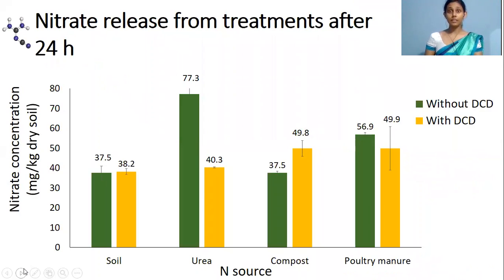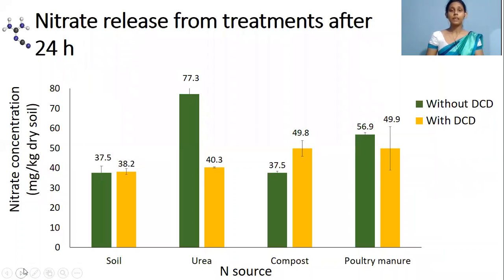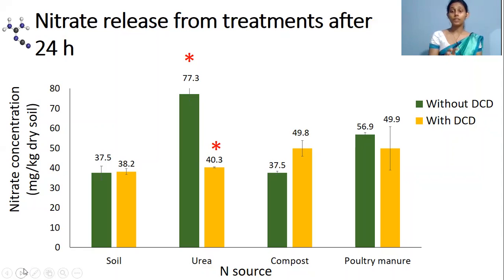This graph is related to the second experiment and represents how nitrate is released from leachate after 24 hours. Here, nitrate concentration has been significantly reduced due to DCD only with urea as the nitrogen source. Along with compost and poultry manure, we cannot observe a significant reduction in nitrate concentration.